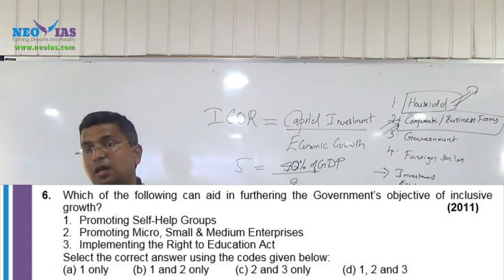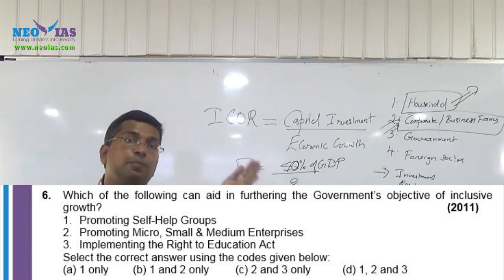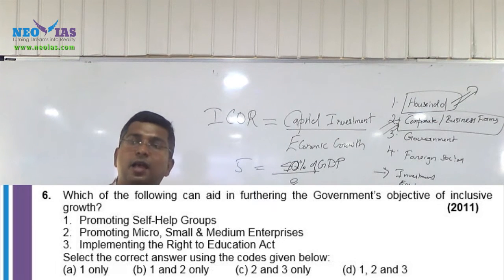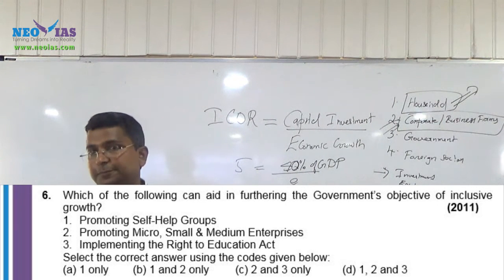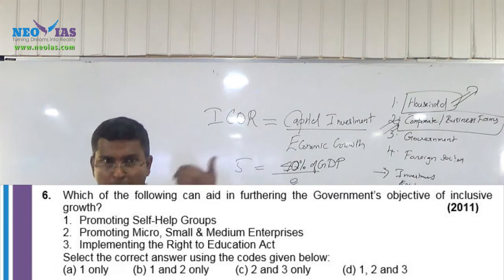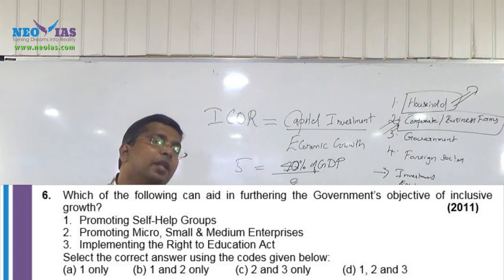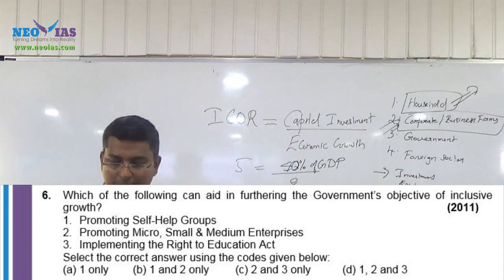After the agriculture sector, the next major employment-generating sector on which the majority of people's livelihoods depend is small and medium enterprises. So if you promote micro, small and medium enterprises, it will result in inclusive growth.